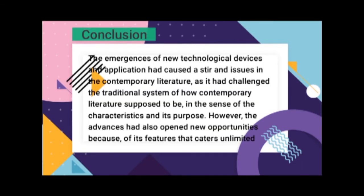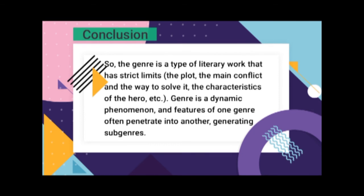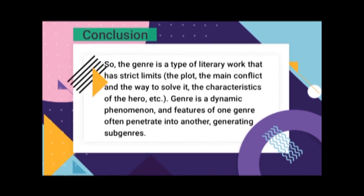In conclusion, the emergence of new technological devices and applications has caused fears and issues in contemporary literature, challenging the traditional system of how contemporary literature is supposed to work — in terms of its characteristics and purpose. However, these advances also open new opportunities because of features that cater to unlimited access, efficient purchasing, and reading via online or offline, creating a new door for readers to access their favorite books anytime and anywhere. Genre is a type of literary work that has strict limits — the plot, the main conflict, the way to solve it, and the characteristics of the hero. Genre is a dynamic phenomenon and features of one genre often penetrate into another, generating subgenres.